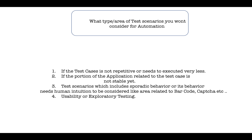What type of scenarios would you not consider for automation? Test cases that are not repetitive or need to be executed very infrequently, or where the related portion of the application is not yet stable. Also, scenarios that include sporadic behavior or require human intervention — such as areas related to barcode or captcha — and usability or exploratory testing are not considered for automation.